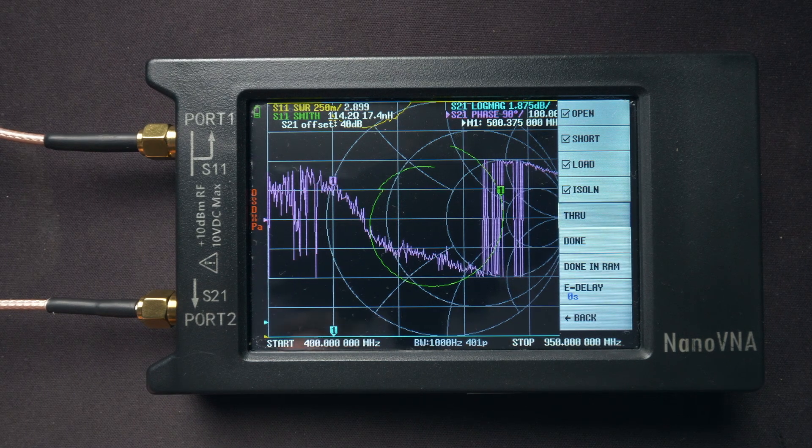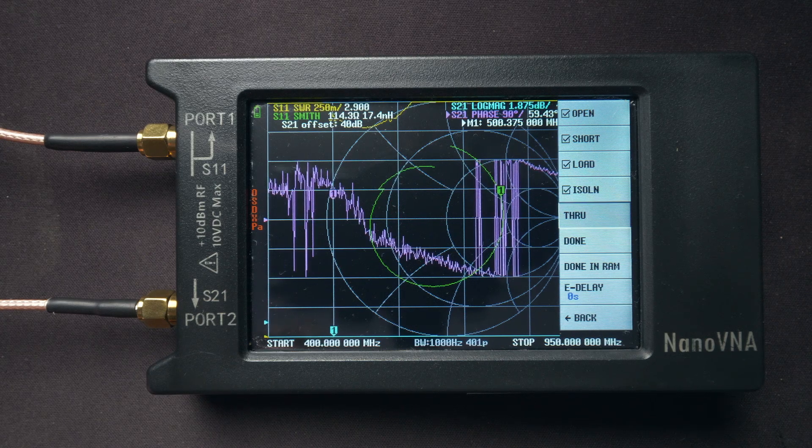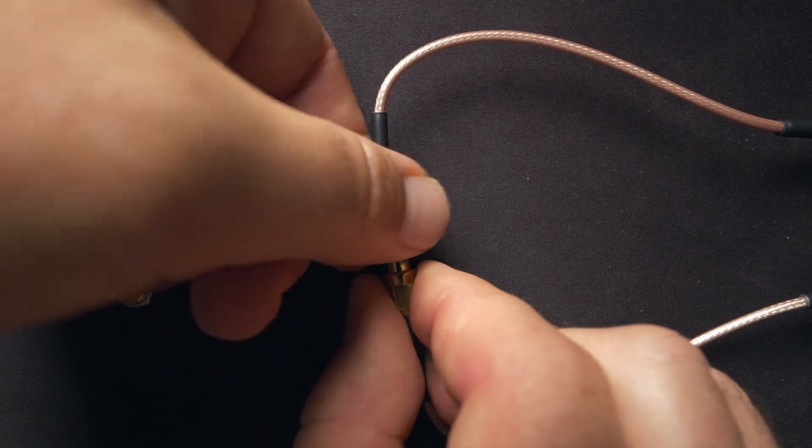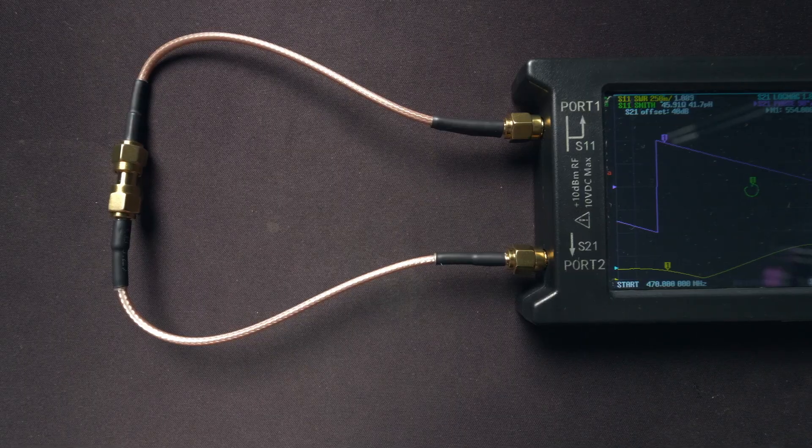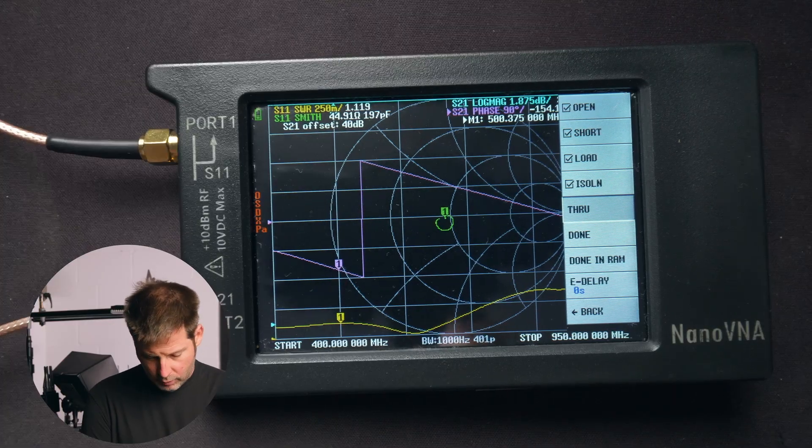Isolation is complete. Next, we're going to connect port 1 and port 2, or port S11 and port S21 together here with our two cables and join them. And then we'll go ahead and press through.